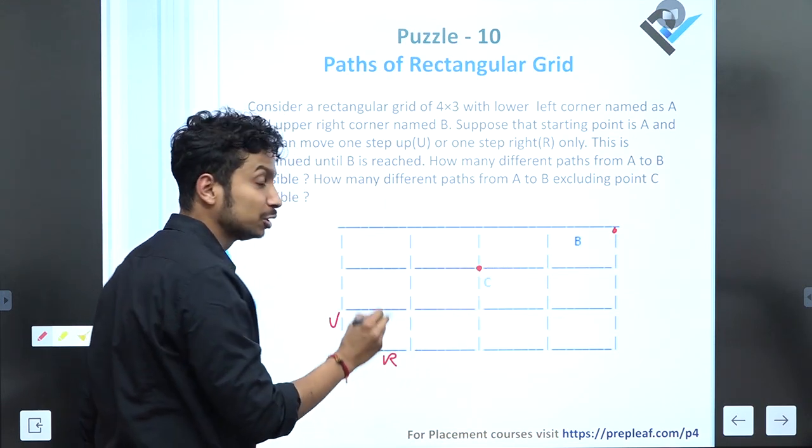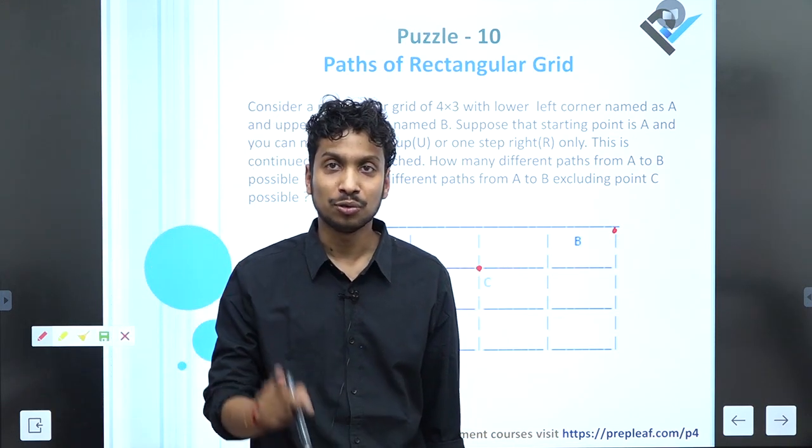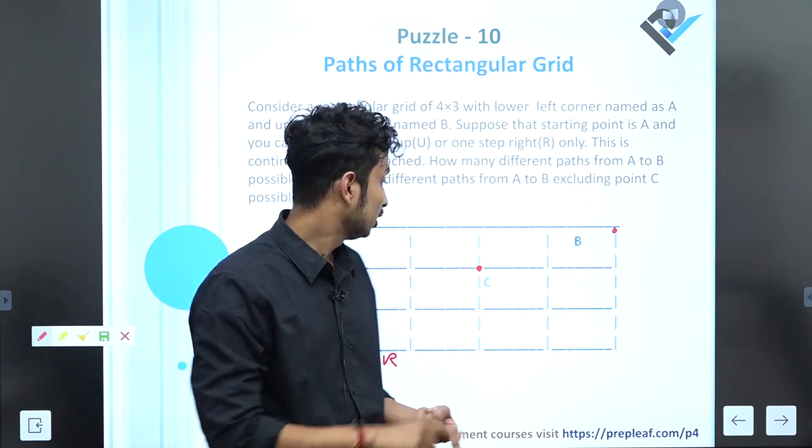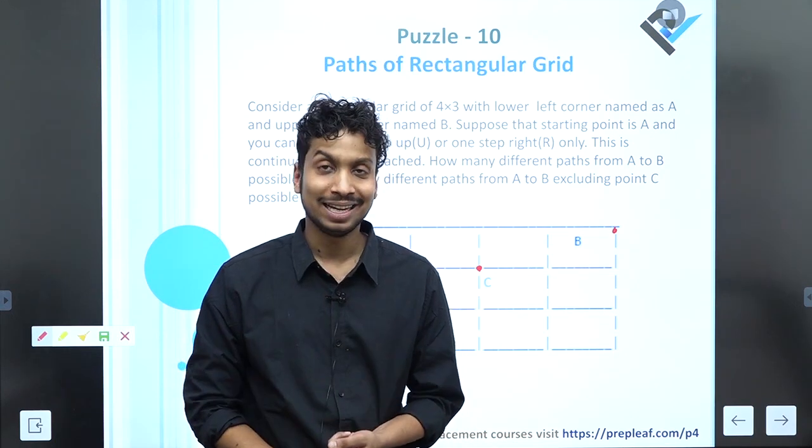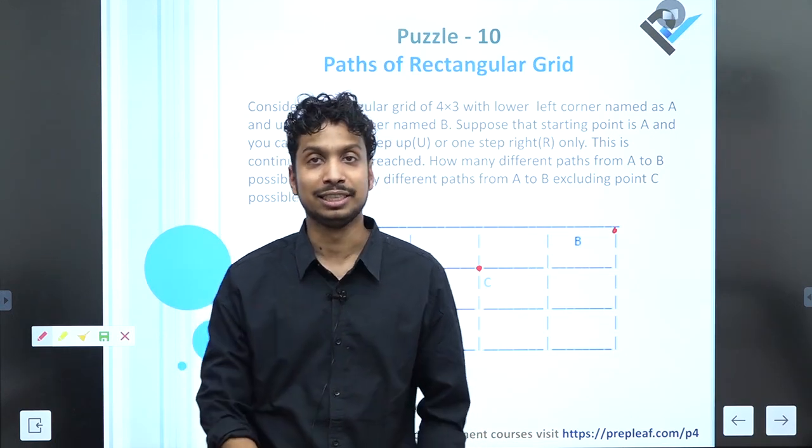Second question is: the person wants to reach A to B but should not cross C. So we have to find out two scenarios: total number of cases reaching A to B, and total number of cases reaching A to B excluding point C.